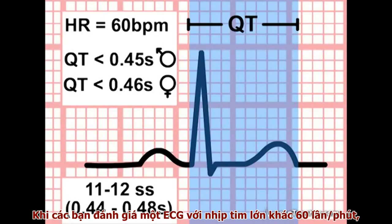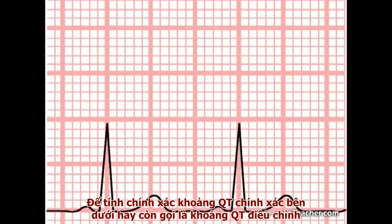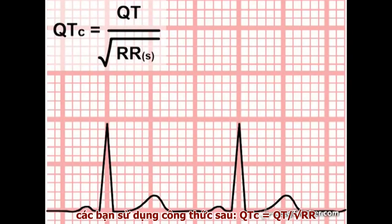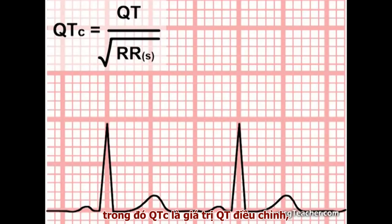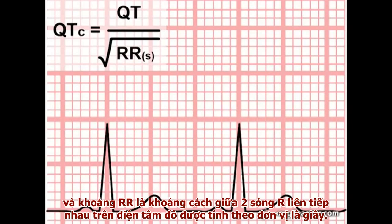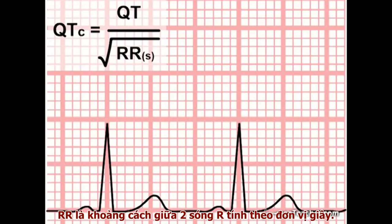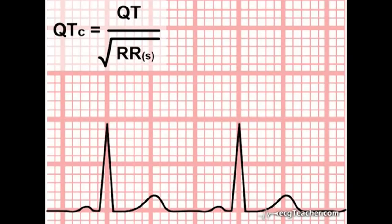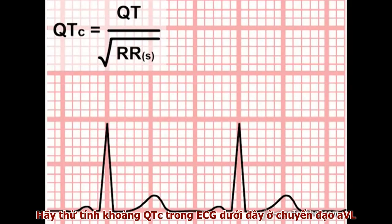When faced with an ECG with a heart rate other than 60 beats per minute, to calculate the true underlying QT interval — referred to as the corrected QT interval — we use the formula shown on screen. The corrected QT interval is equal to the observed QT interval divided by the square root of the RR interval. The RR interval is the distance between the preceding R waves measured in seconds. This sounds daunting, but it's pretty straightforward. Let's calculate the corrected QT interval on this readout from AVL.